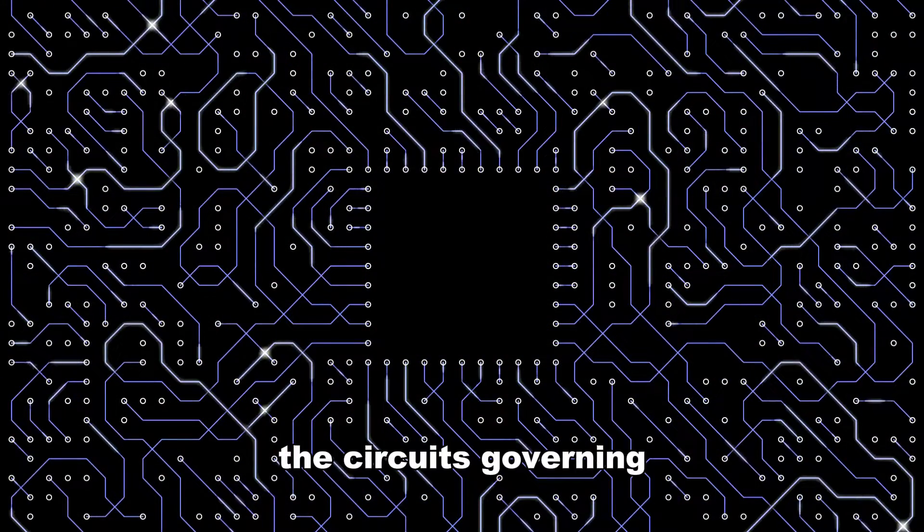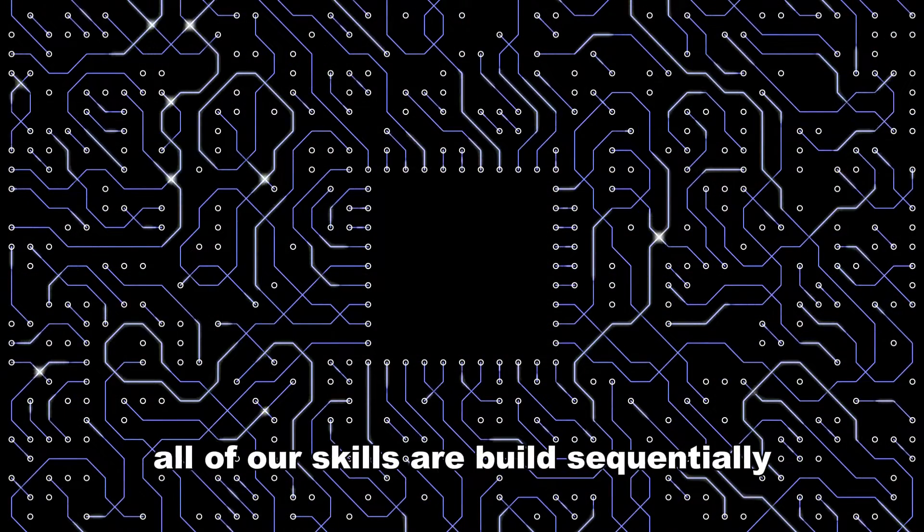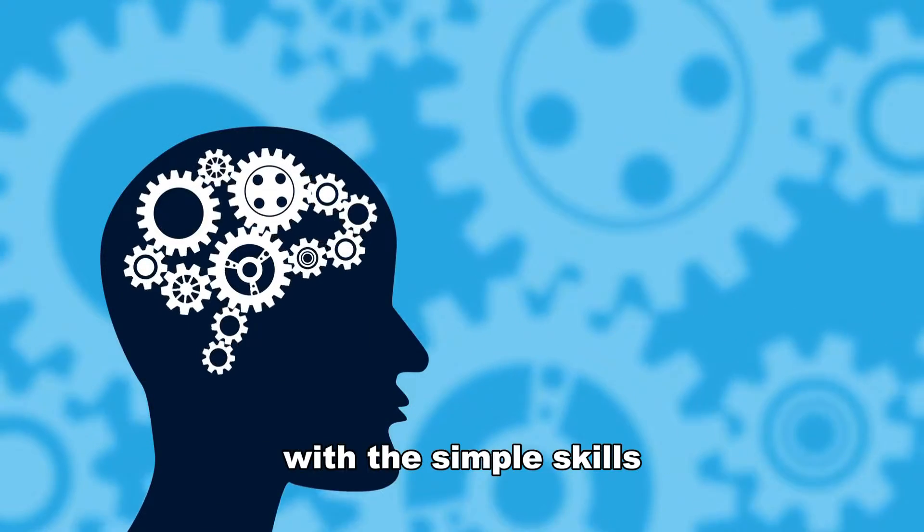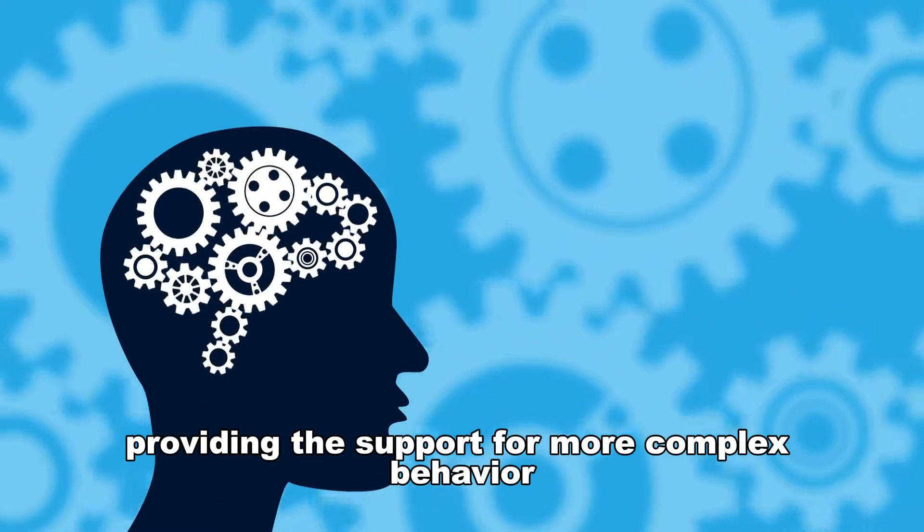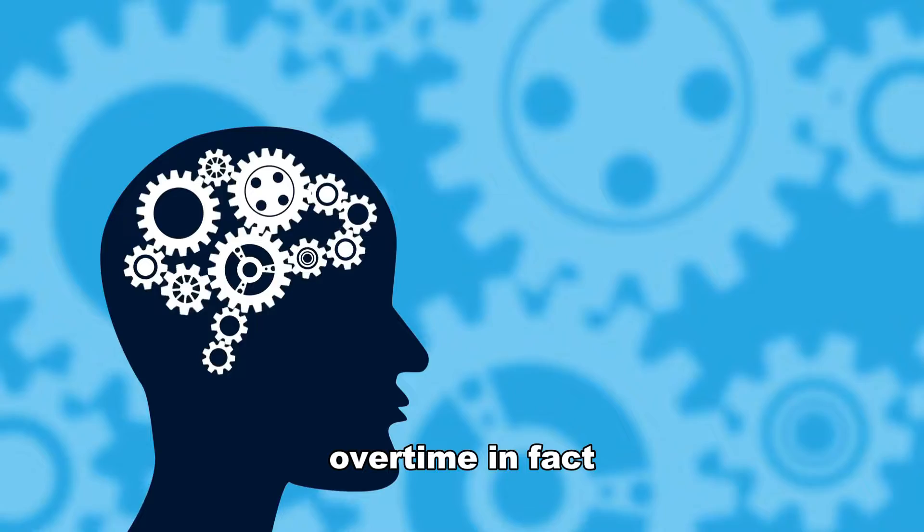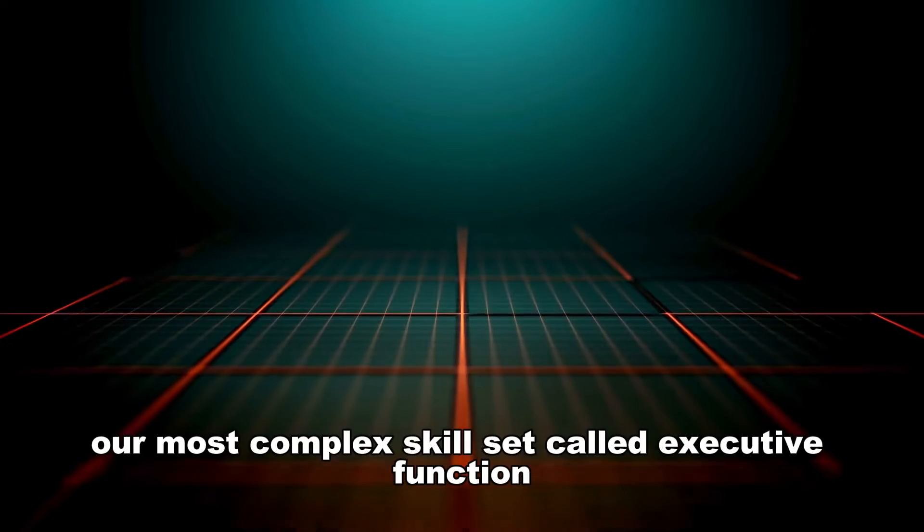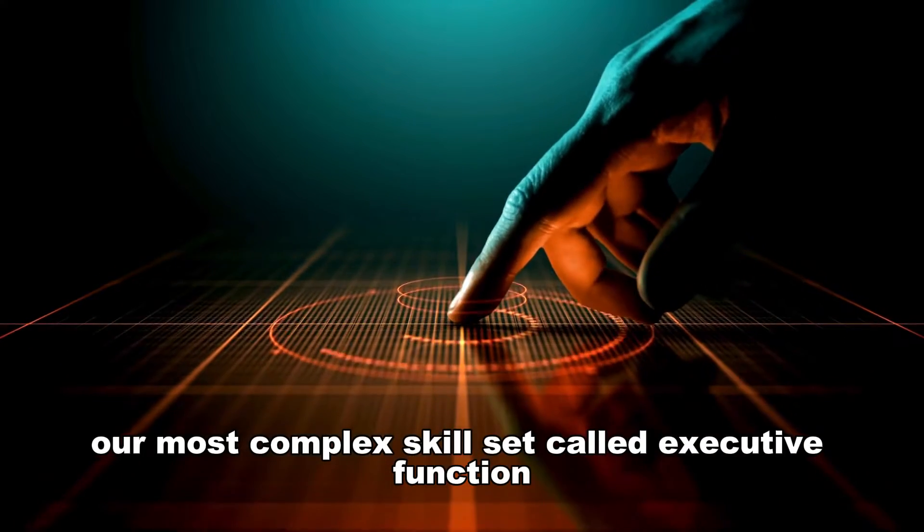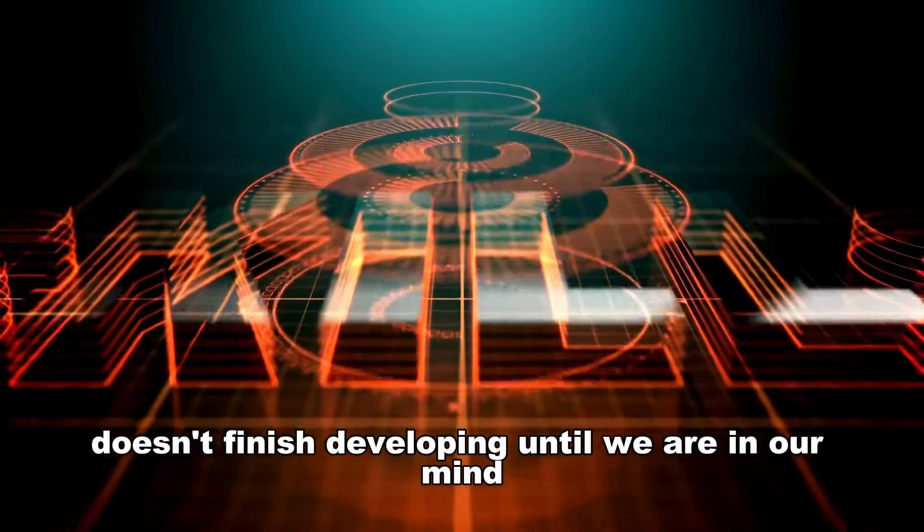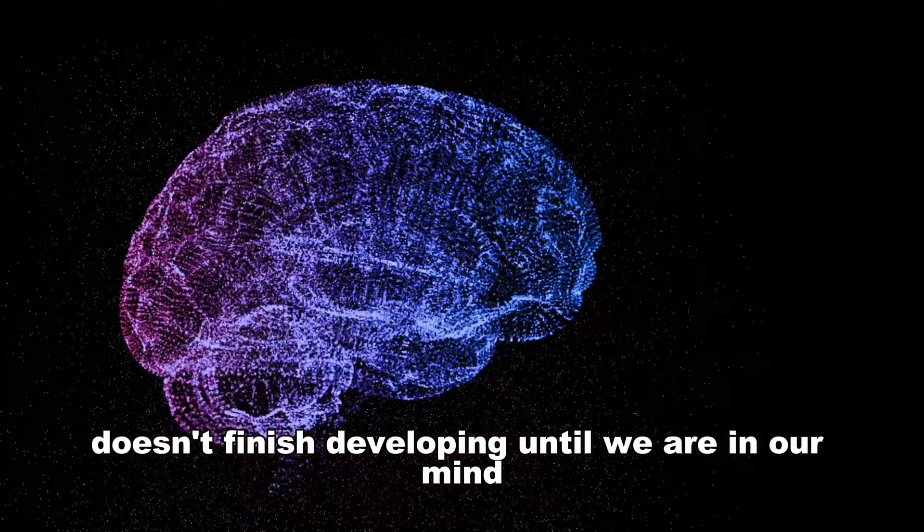The circuits governing all of our skills are built sequentially, with simpler skills providing the support for more complex behaviors over time. In fact, our most complex skill set called executive function doesn't finish developing until we are in our mid-20s.